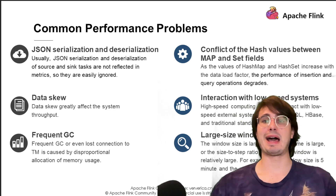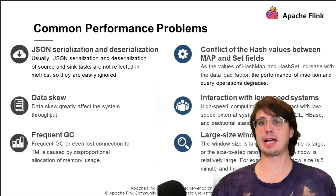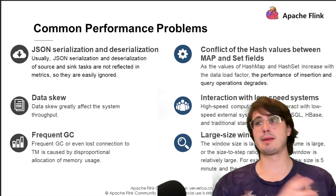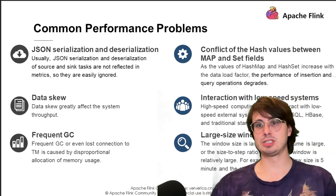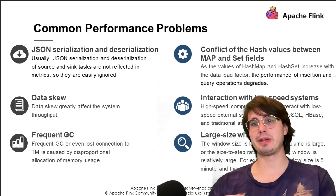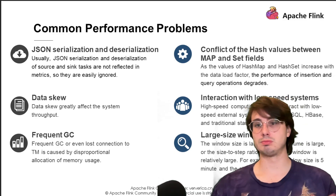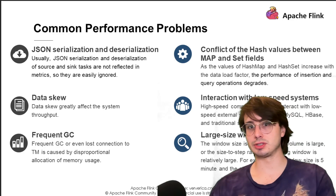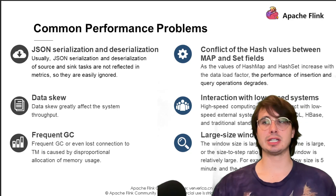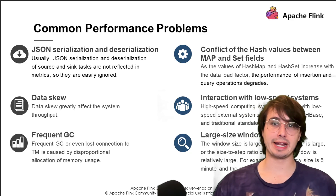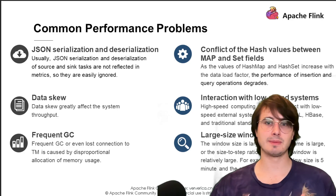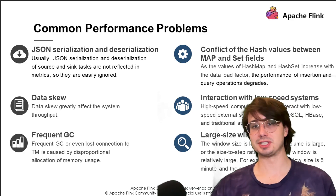Another common challenge is back pressure. Back pressure is a natural flow control mechanism, but persistent back pressure indicates bottlenecks — meaning you're not able to process everything fast enough. Identifying which operators are slow and why is crucial to finding the root cause. Common causes include insufficient parallelism, expensive computation, slow external system calls, or data skew. Address back pressure by increasing parallelism for bottleneck operators, optimizing computation logic, implementing caching for external calls, or handling skewed data through re-partitioning strategies.